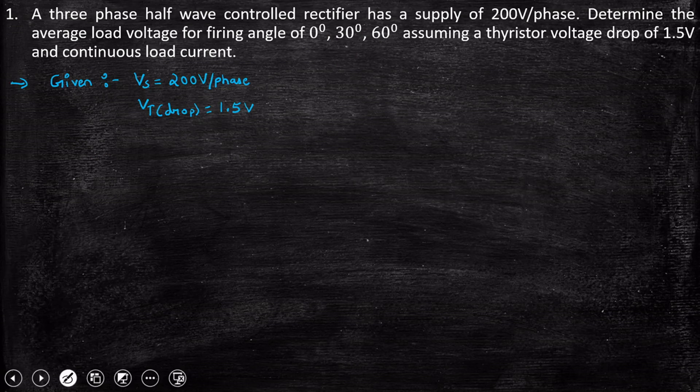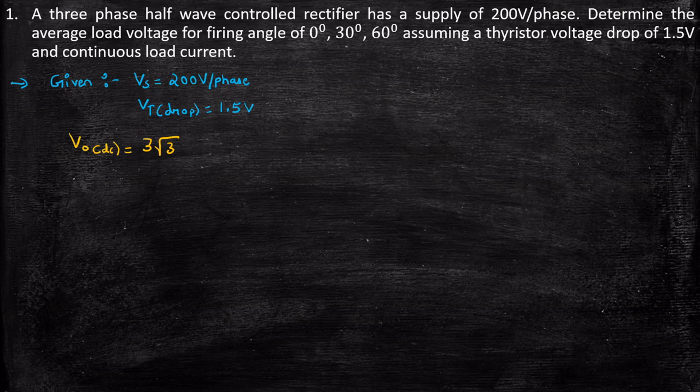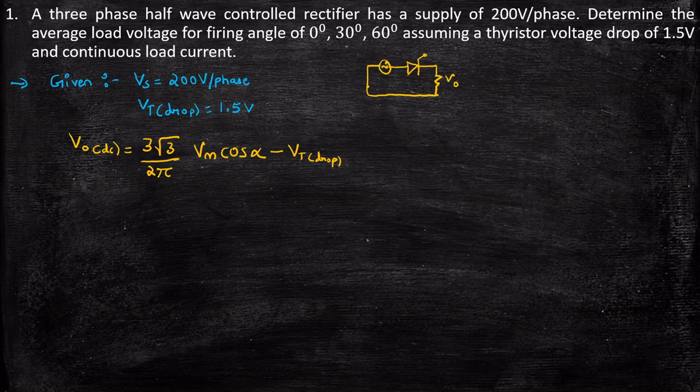So they have directly given the per-phase voltage so we don't have to convert line into phase voltage. They have also given us the voltage drop across thyristor that is Vt is equal to 1.5 volt. Now they were asking us to find the average load voltage for 0 degree, 30 degree and 60 degree. So we had derived the expression for average output voltage. So we know that from formula Vout DC is given as 3 root 3 by 2 pi Vm cos alpha. But here we have to subtract the thyristor voltage drop as well.